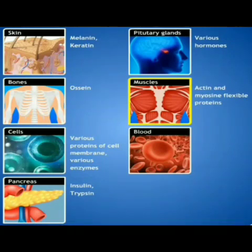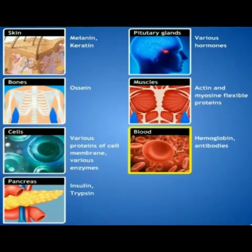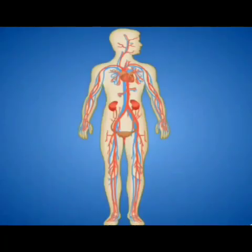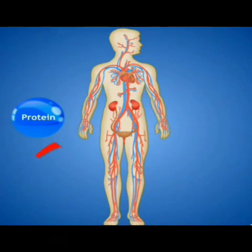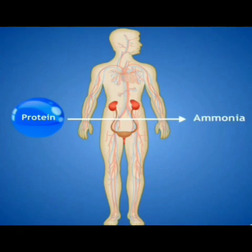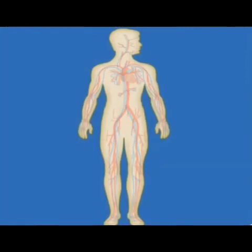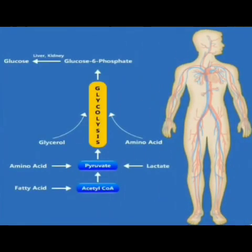Always remember: excess amino acids obtained from protein are not stored in the body. They are broken down and eliminated out of the body in the form of ammonia. If necessary, excess proteins are converted into useful substances like glucose through the process of gluconeogenesis.